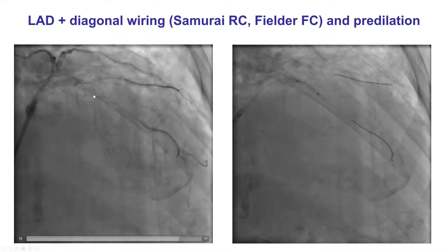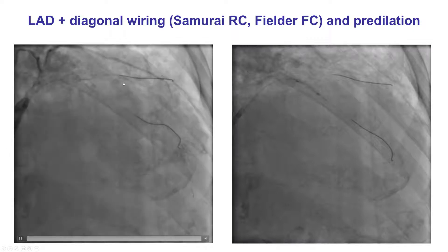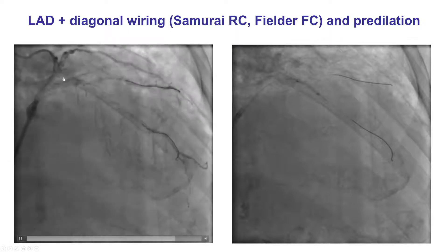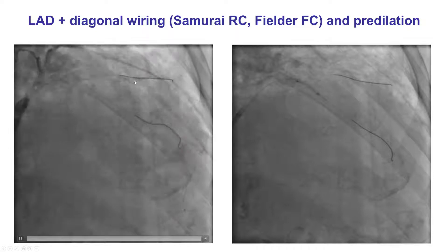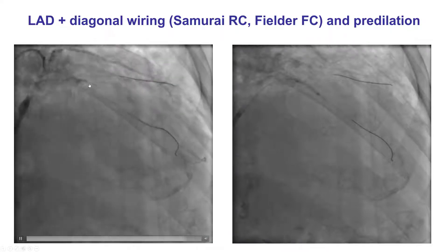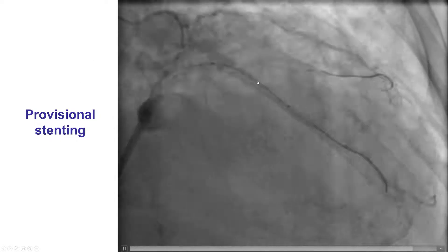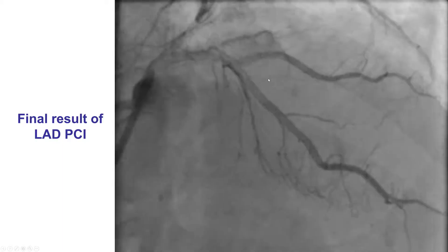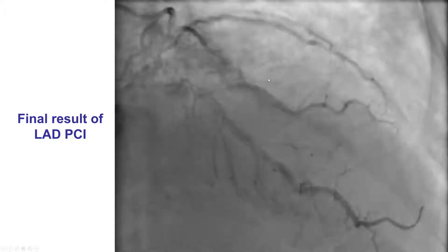In this particular case, we thought that the chance of occlusion of that diagonal branch, which was of decent size, was low. Therefore, we decided to do provisional stenting, having a guide wire in the diagonal in case that flow into it became compromised after stenting of the LAD. We went ahead and placed a stent jailing the diagonal branch, which caused pinching of the ostium. We rewired the diagonal branch with another guide wire and then did a kissing balloon inflation, providing a nice result with TIMI-3 flow in both the LAD and the first diagonal branch.